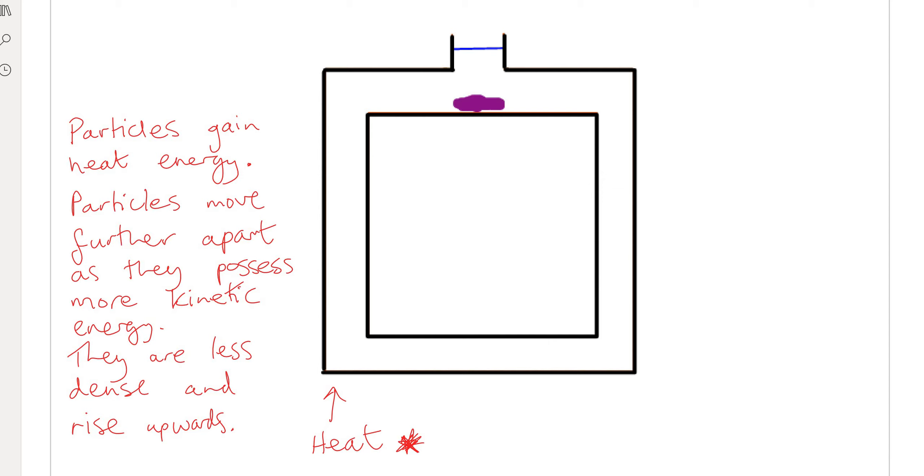Particles gain heat energy on the left-hand side of the tube. They tend to move further apart because they possess more kinetic energy. That means that they are less dense and rise upwards.